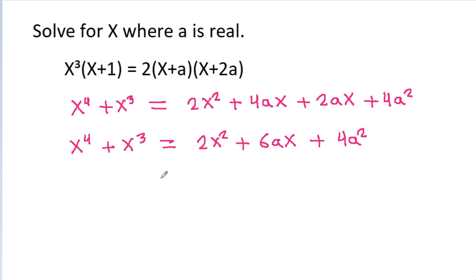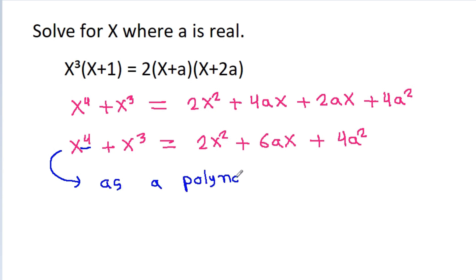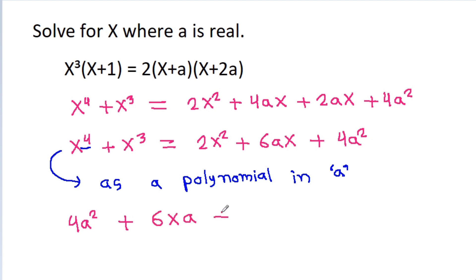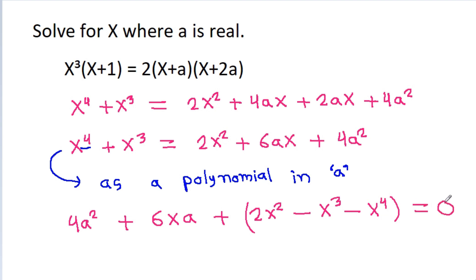The degree of this polynomial is 4, so it is biquadratic in x, which will be very hard to solve. But we can consider it as a polynomial in a. So it is 4a² + 6xa + 2x² − x³ − x⁴ = 0.